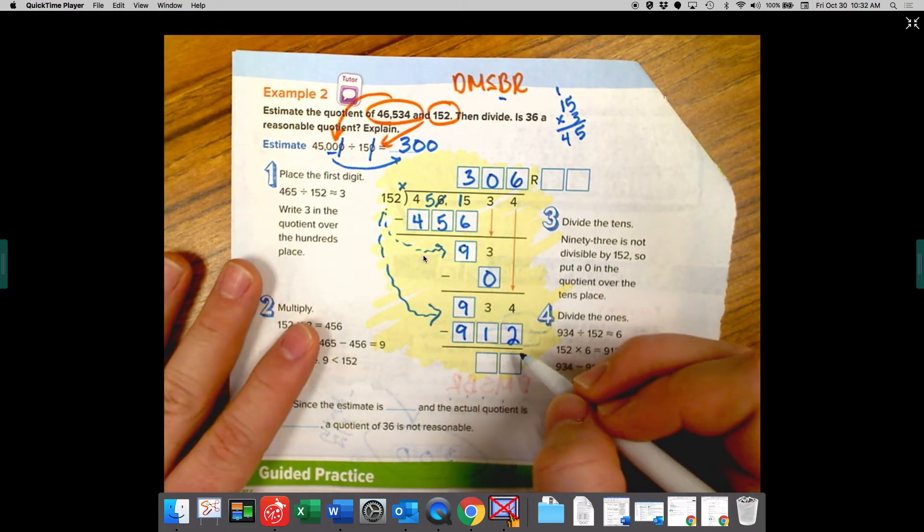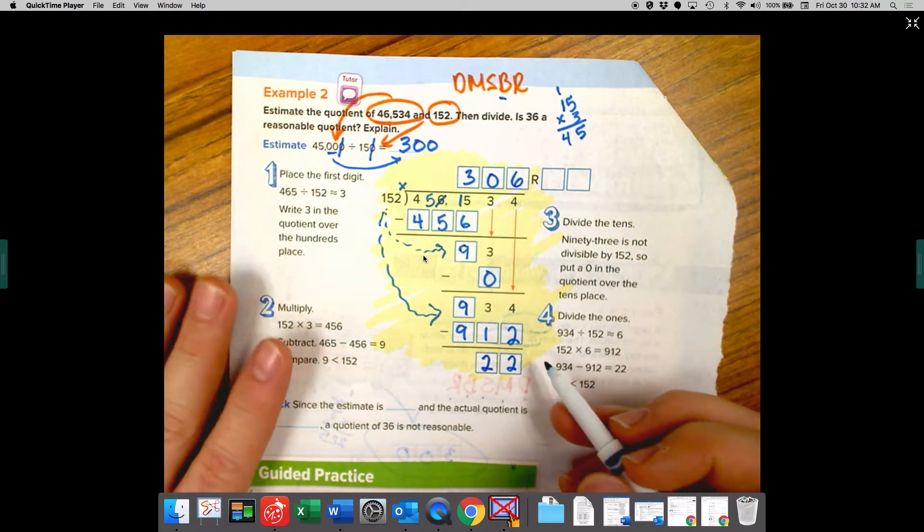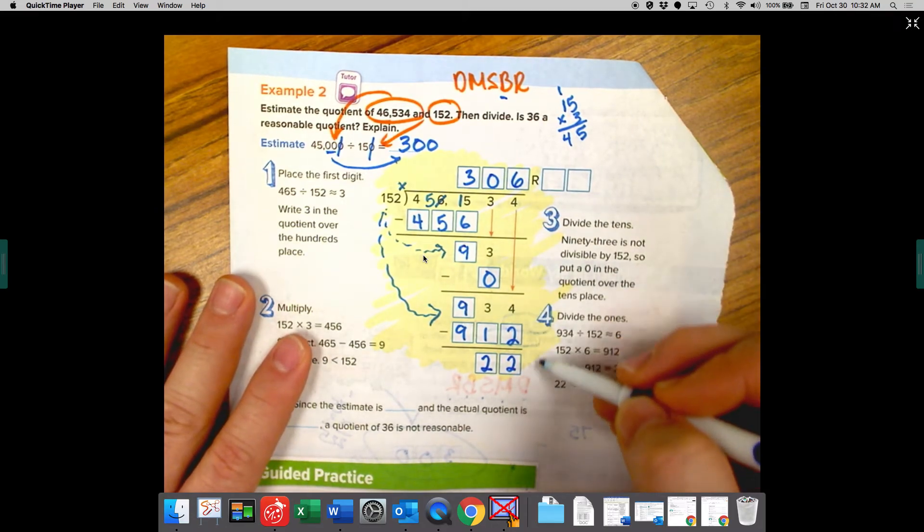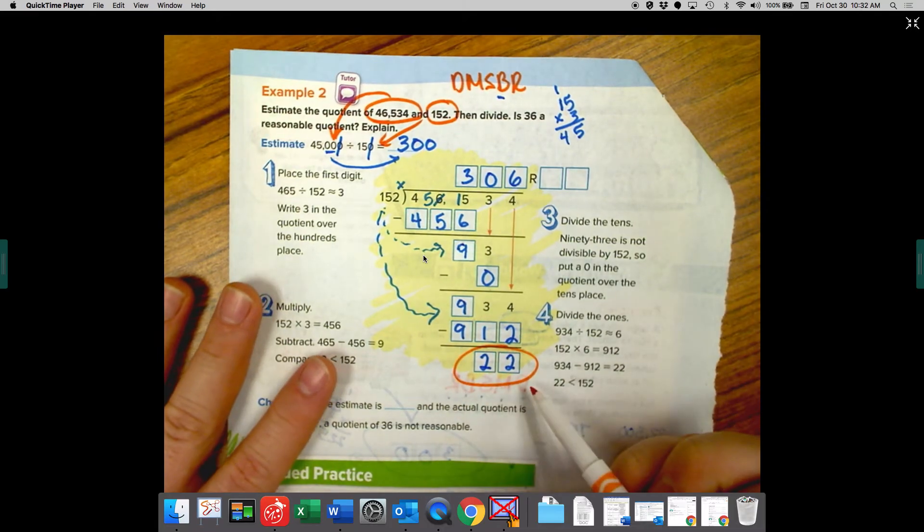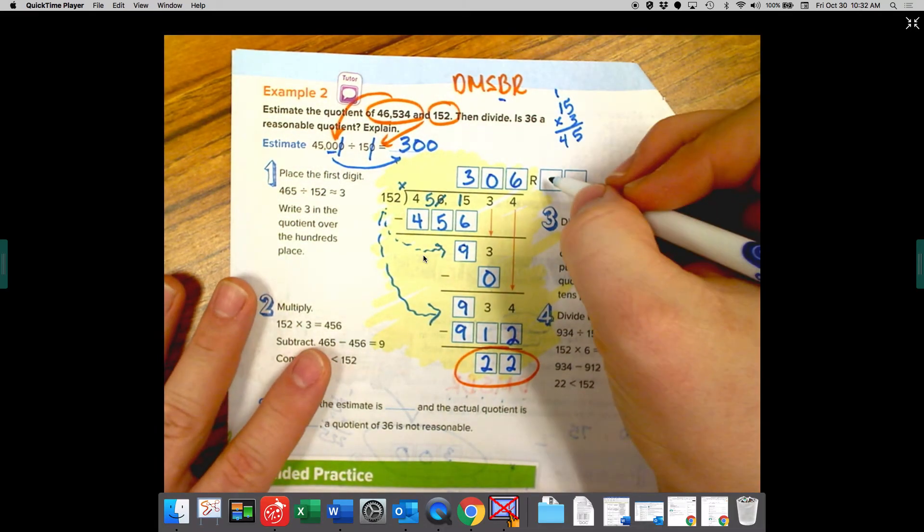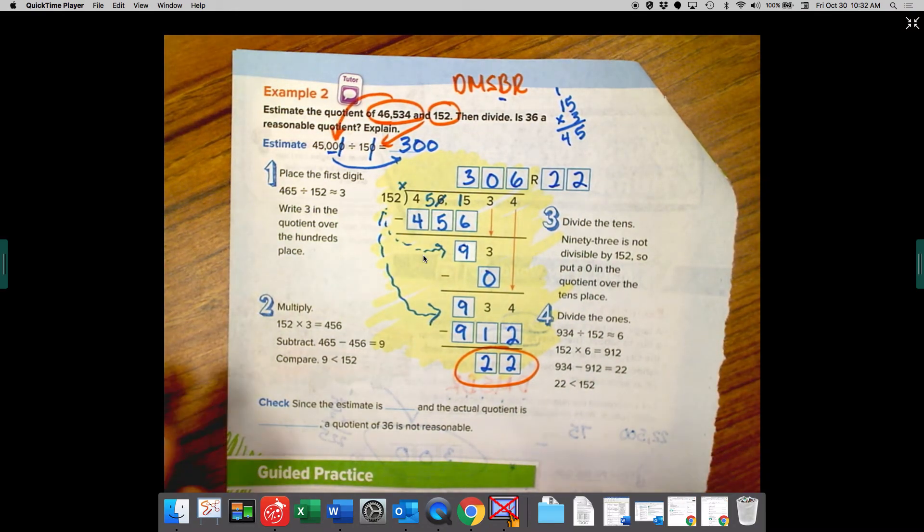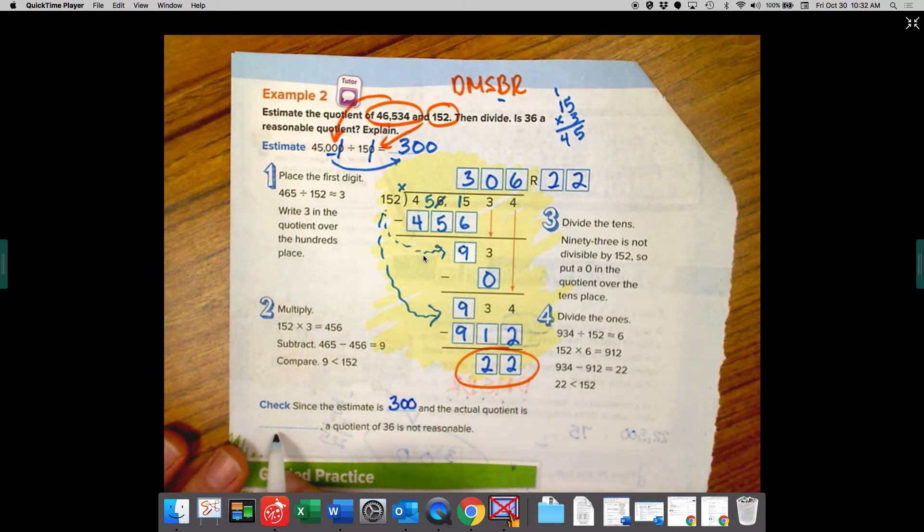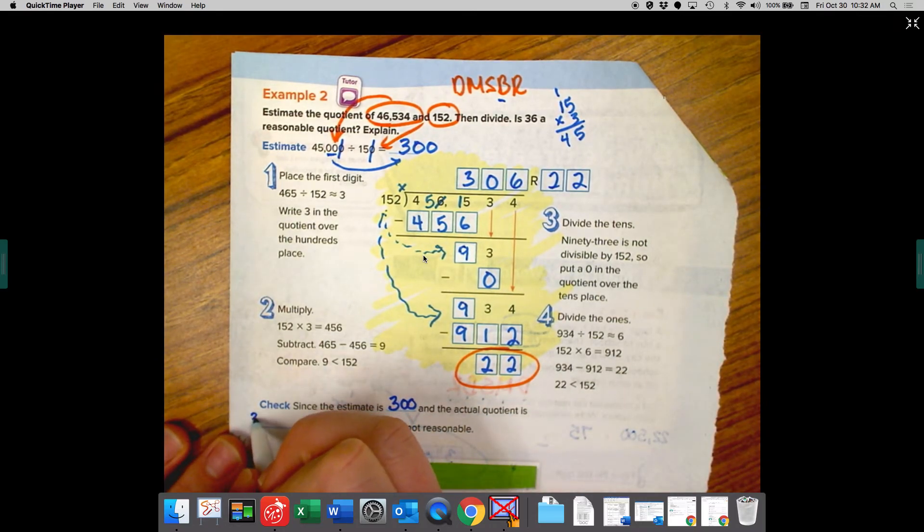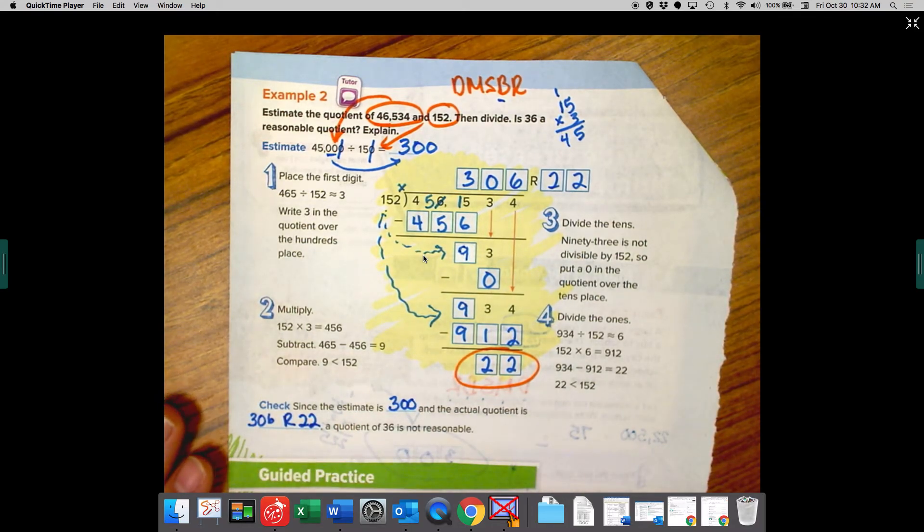So four minus two is two, three minus one is two. I have 22 left here. There's nothing to bring down. That means that this number is, and I know Daylon's thinking this is the remainder. So that means we have a remainder of 22. Since the estimate is 300 and the actual quotient is 306 remainder 22, a quotient of 36 is not reasonable.